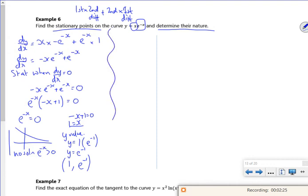Then it says determine the nature. So that means I want to differentiate it again. So d2y by dx squared. I might move that down a little bit. Let me put my dy by dx there.